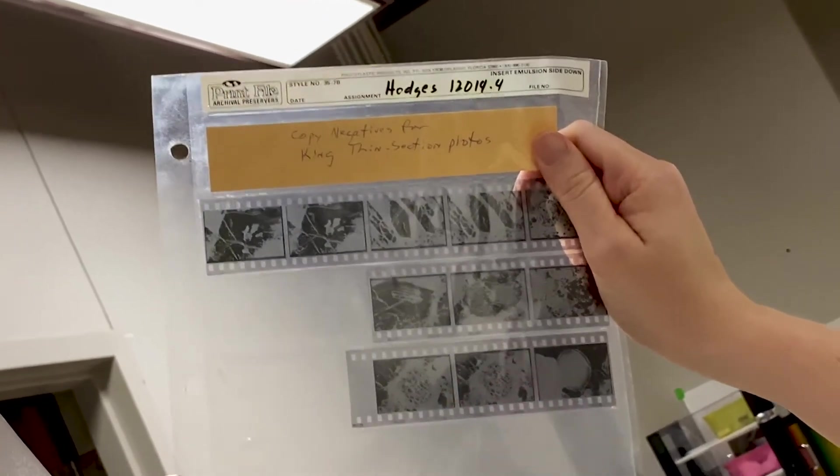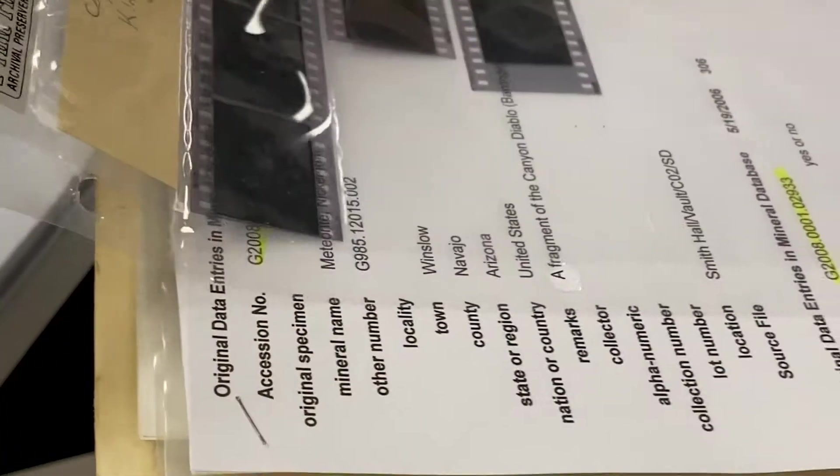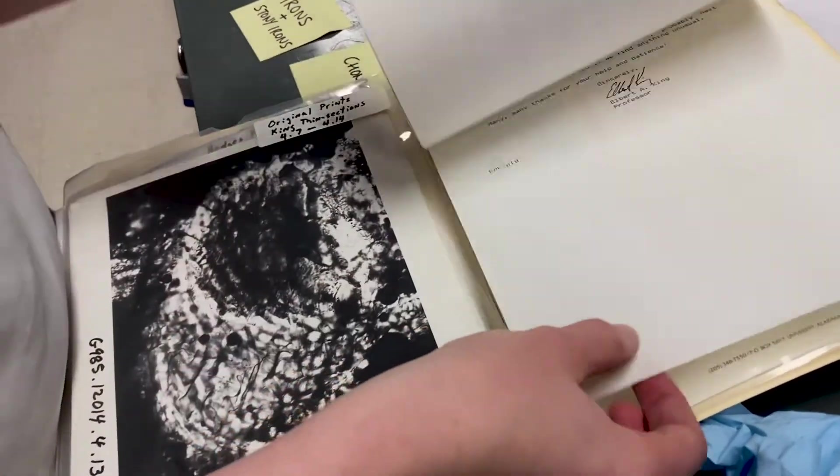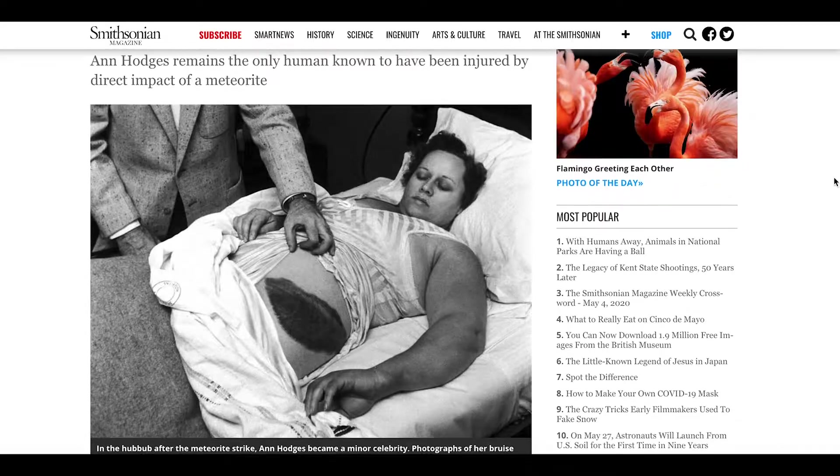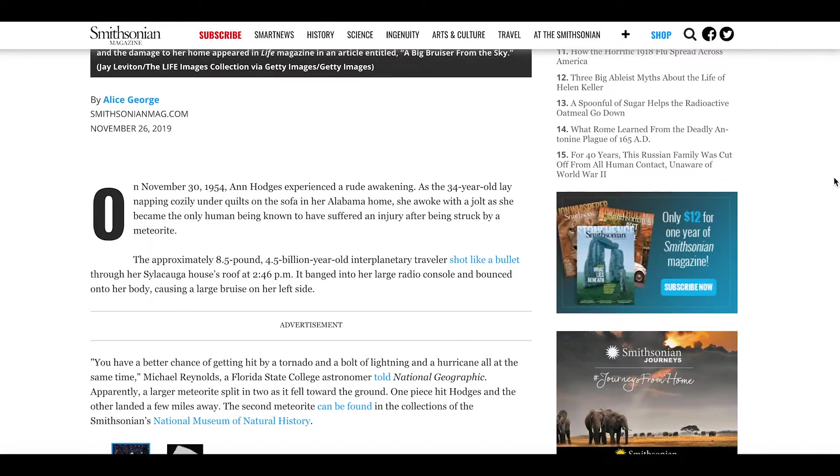This meteorite is relatively well known, it's the only one that has been shown to actually injure someone, which sounds slightly morbid when you think about it, but that has given it some notoriety. It's not necessarily a sample that's been studied a huge amount before. We have this thin section that we're looking at now and the Smithsonian Institute has some samples as well that they have studied.